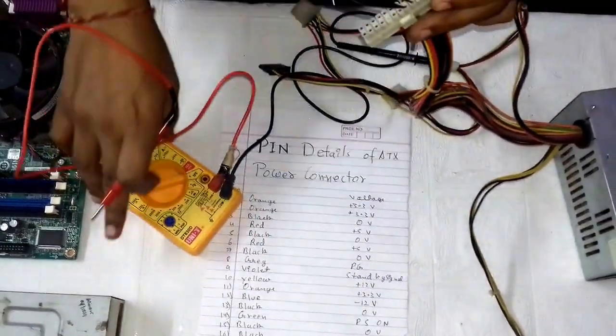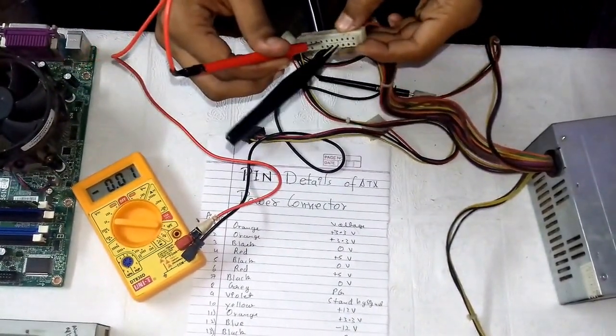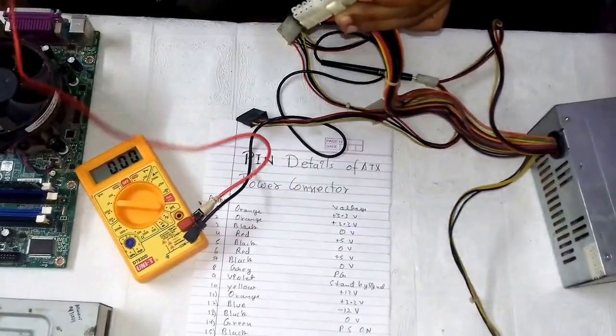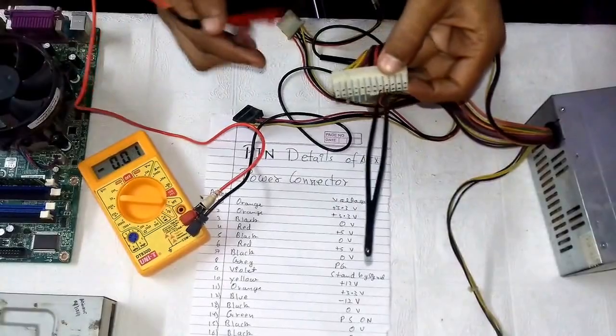Now let us check the voltage of black wire. It is showing 0 volts. Yeah, it is showing 0 volts, so it is correct.